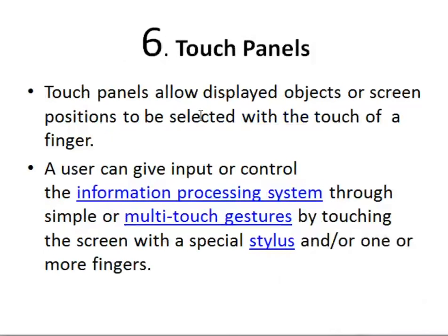The sixth one is touch panels. Most of us are used to them — our smartphones have touch panels. A touch panel allows displayed objects or screen positions to be selected with the touch of a finger. A user can give input or control the information processing system through simple or multi-touch gestures by touching the screen with a special stylus or one or more fingers.